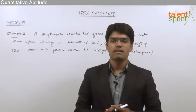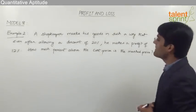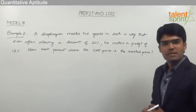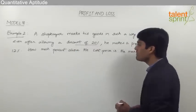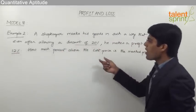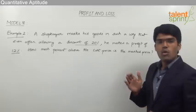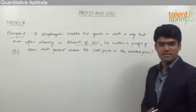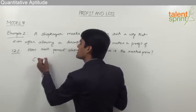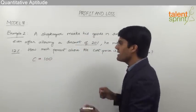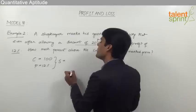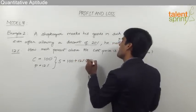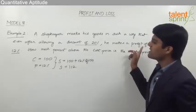Let us take one more example. A shopkeeper marks his goods such that even after allowing a discount of 20%, he makes a profit of 12%. How much percent above the cost price is the marked price? To solve this, we assume cost price is rupees 100. With a 12% profit, selling price equals 100 plus 12% of 100, which is 112 rupees.